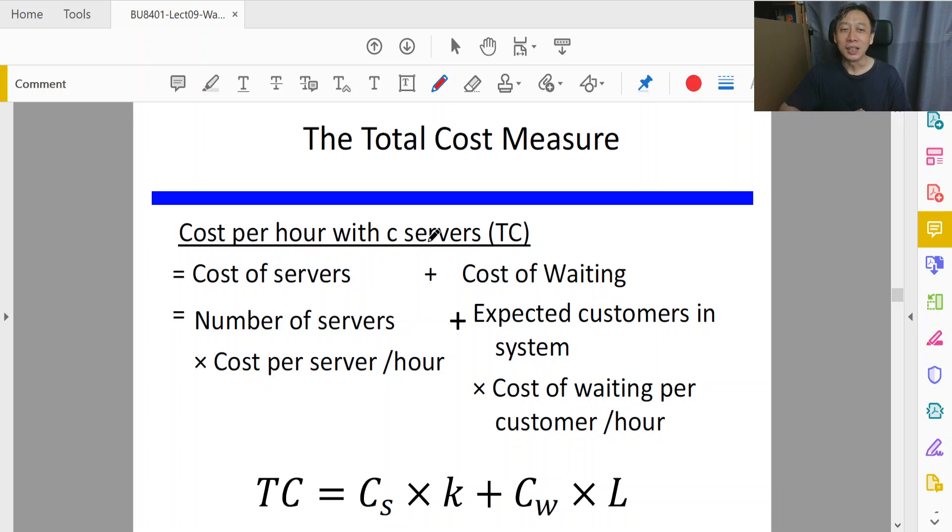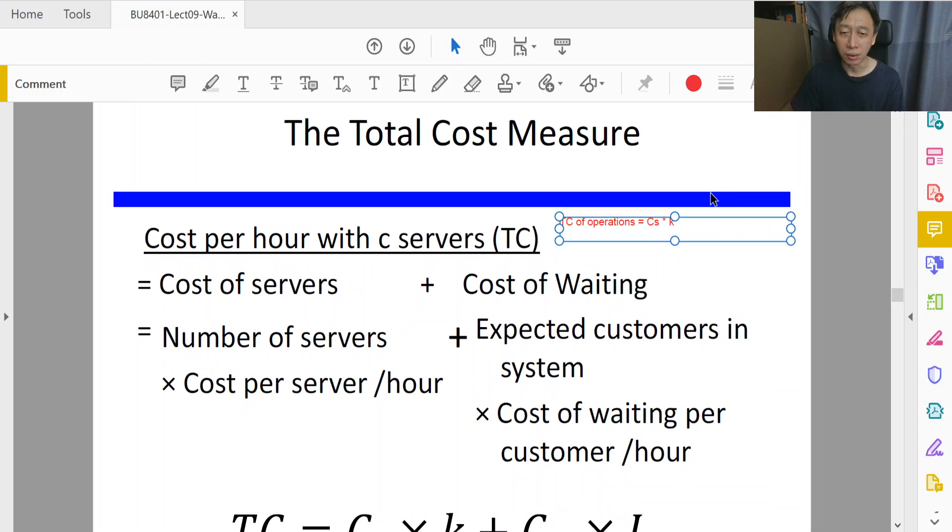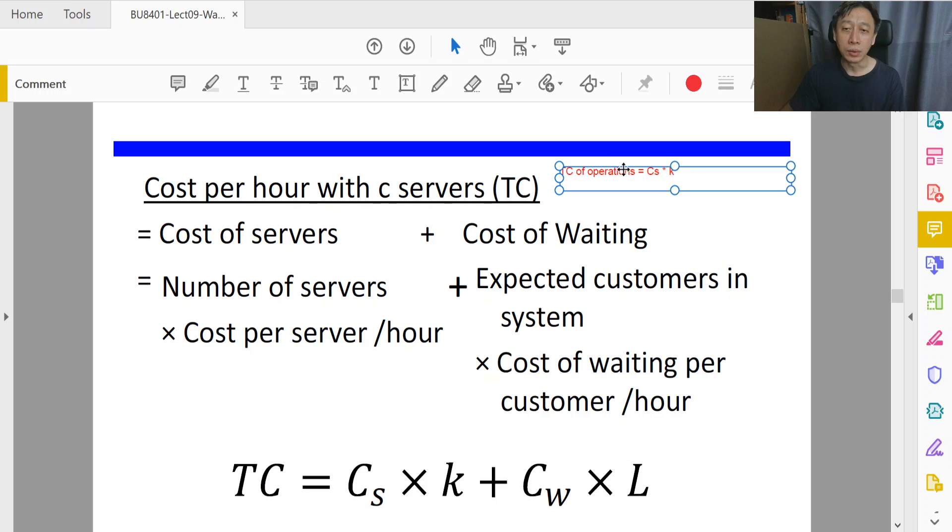If we only think about our cost, then our total cost of operations of the queue system will be based on the number of servers. So the higher the number of servers, the more we pay on an hourly basis.